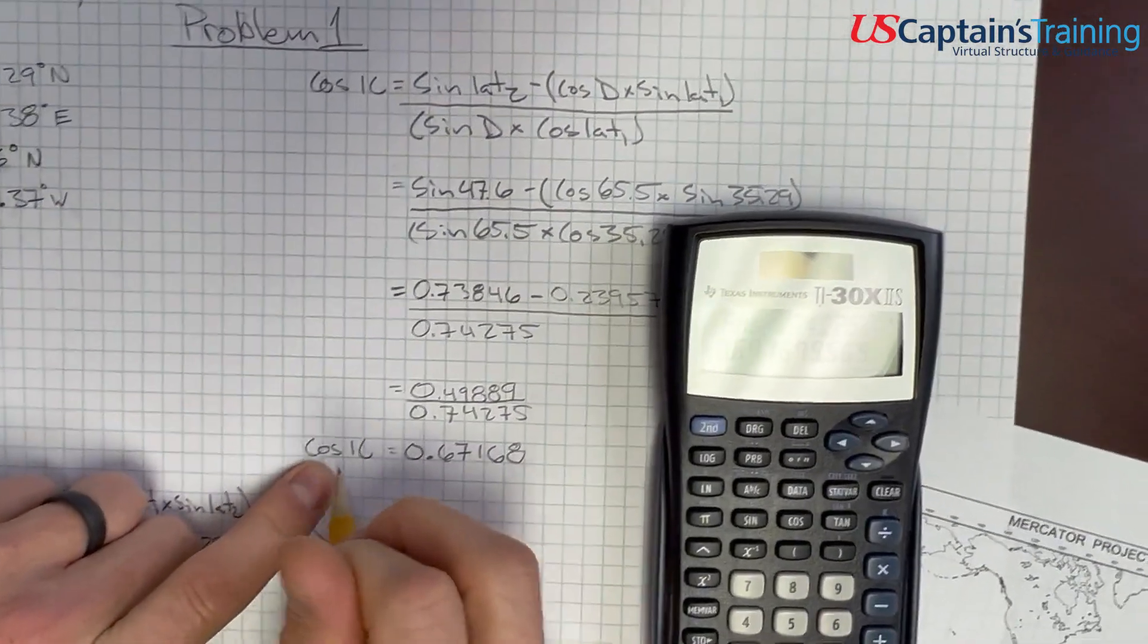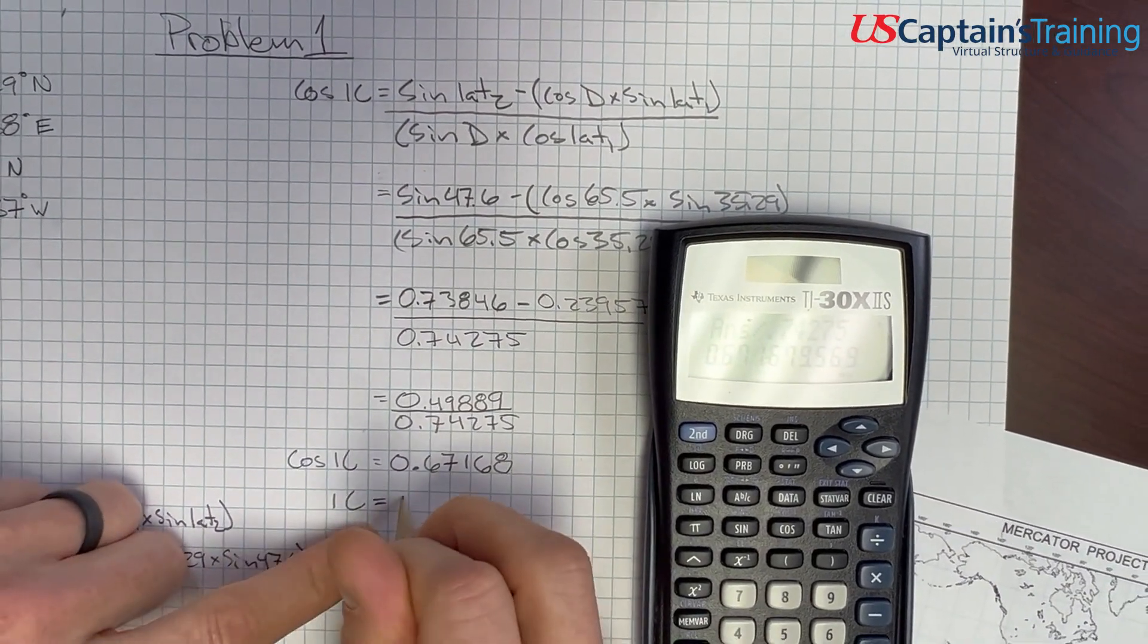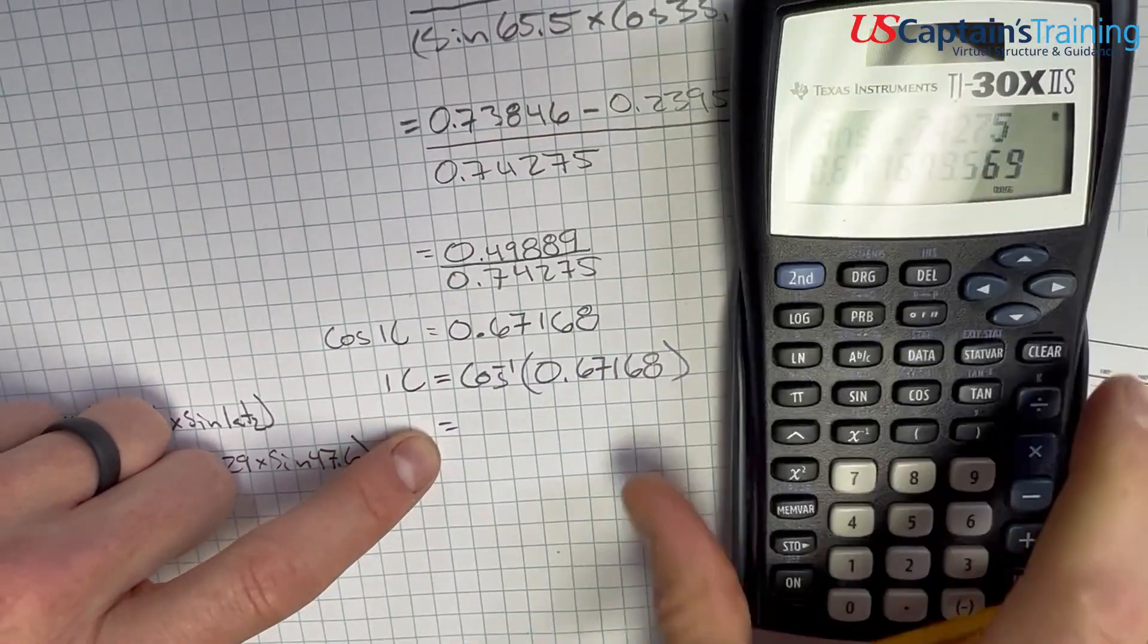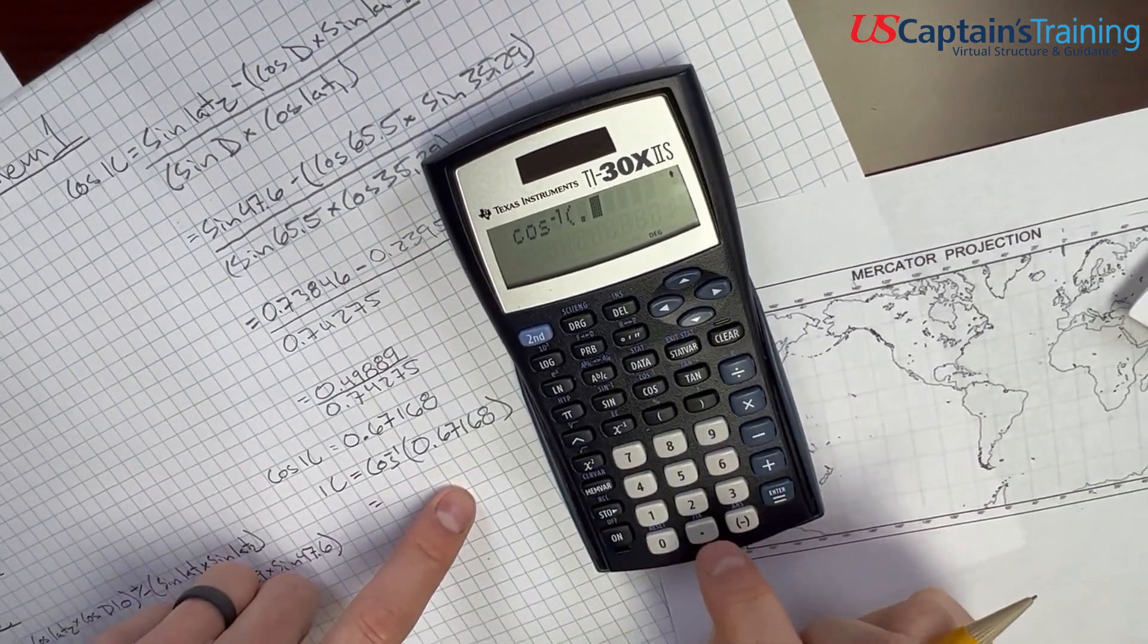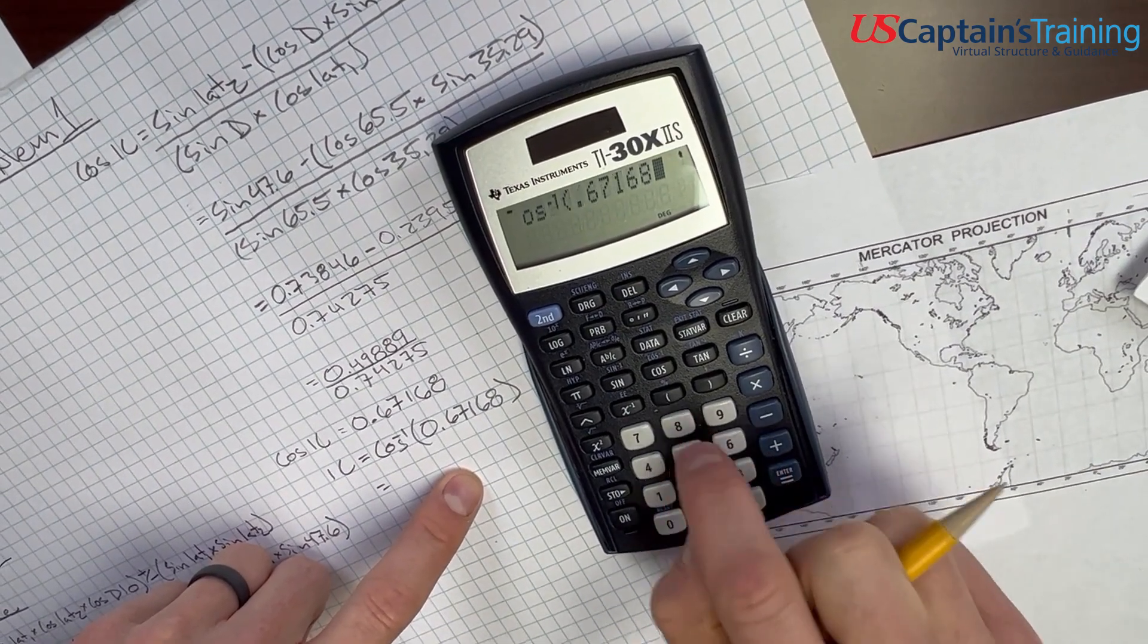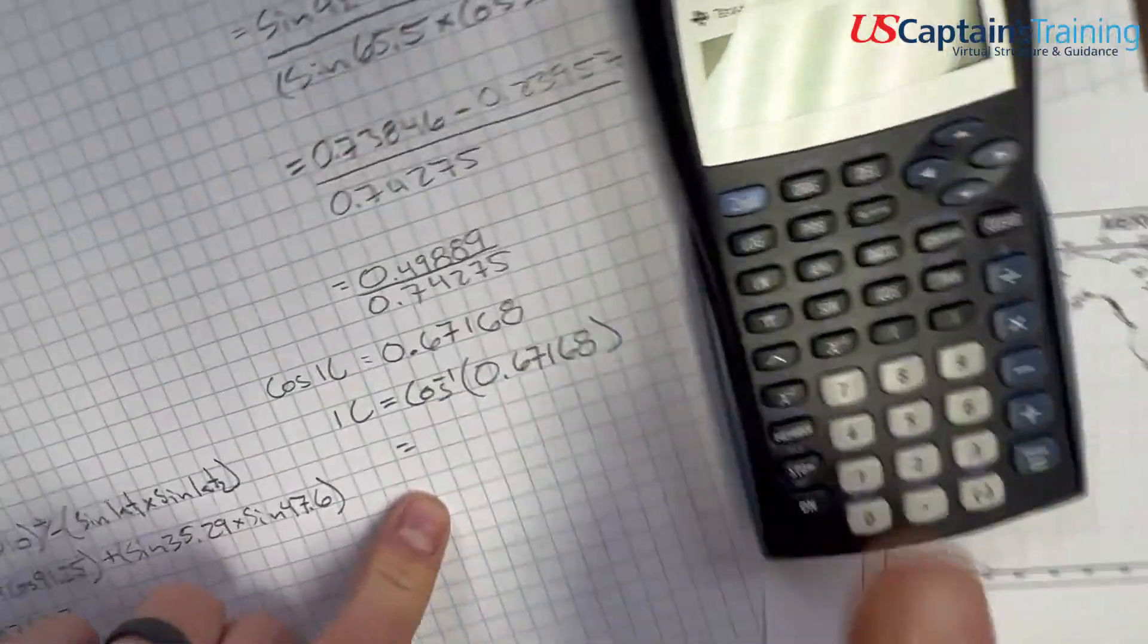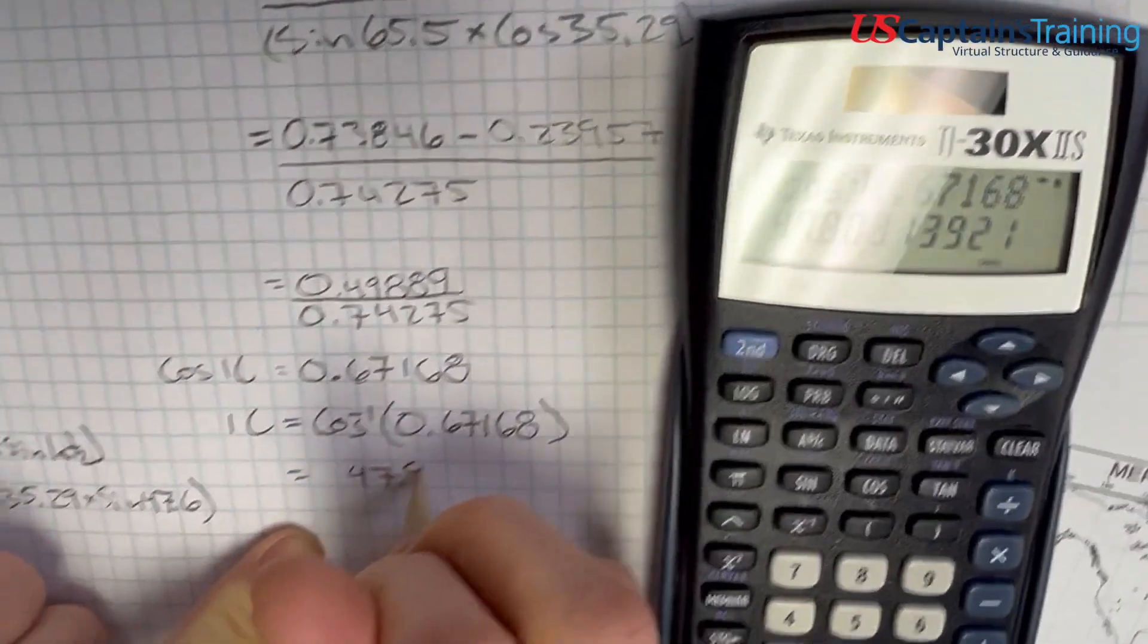And so the way we get rid of this cosine is we take the inverse cosine. So initial course equals the inverse cosine of 0.67168. What does this equal? Second inverse cosine 0.67168. If anyone wondering what that noise is, it's my fridge. I don't know why it does that. Equals 47.8. This is in quadrantal notation. 47.8.